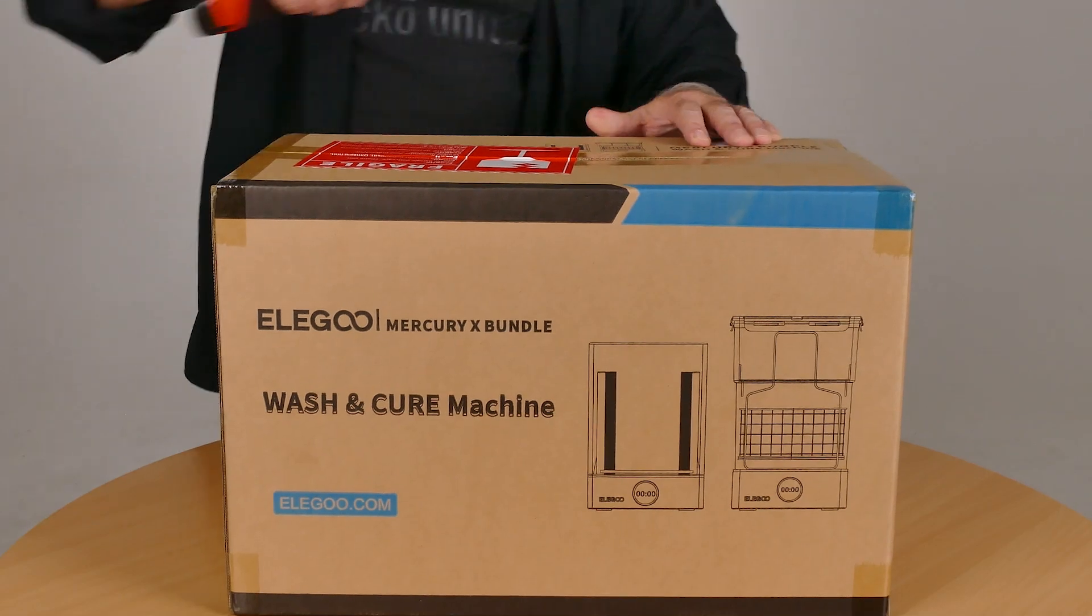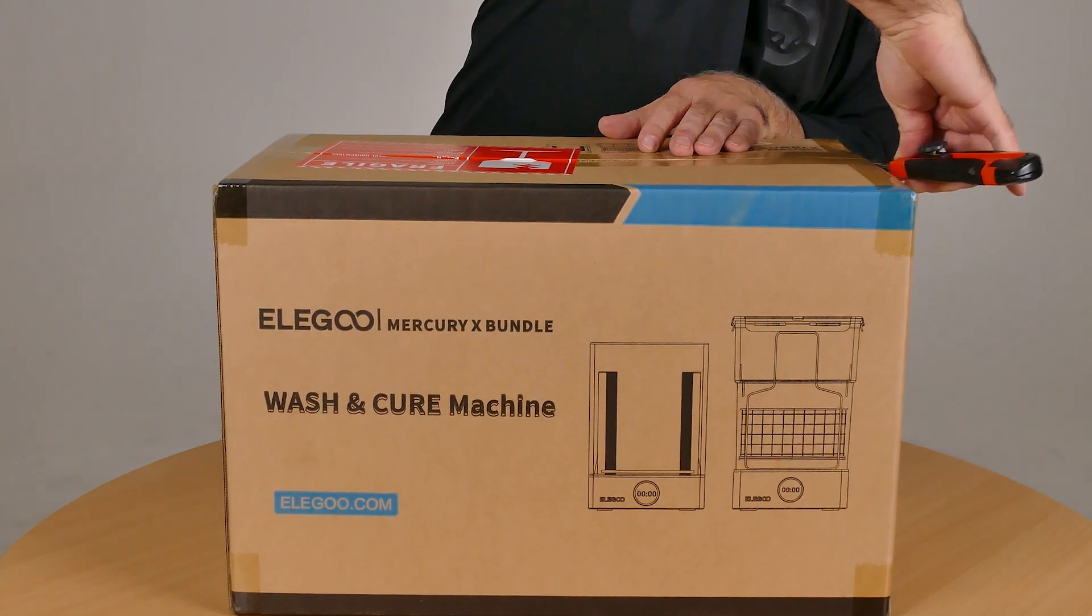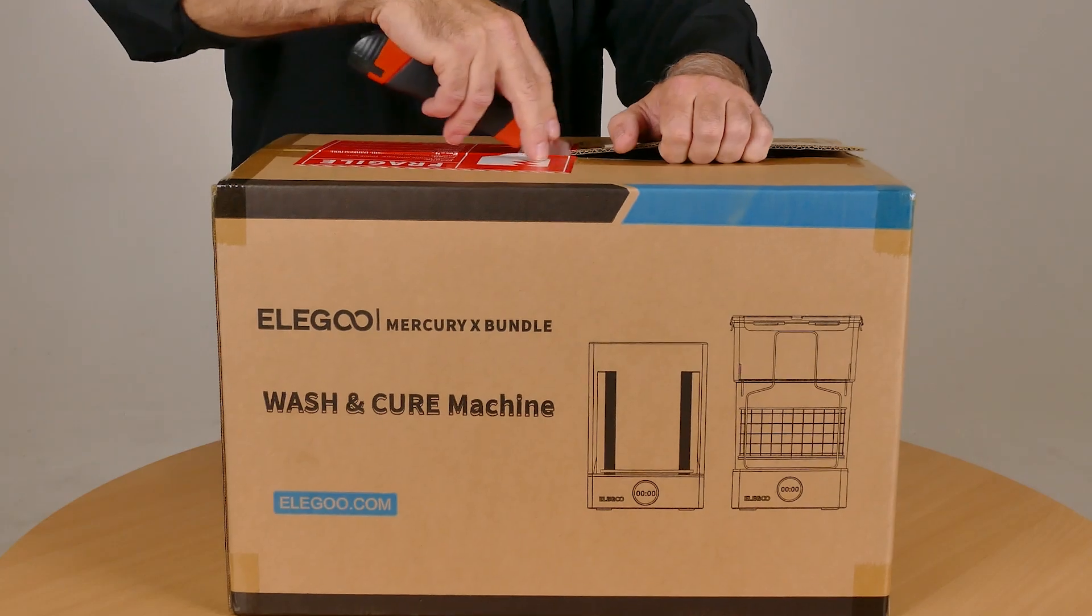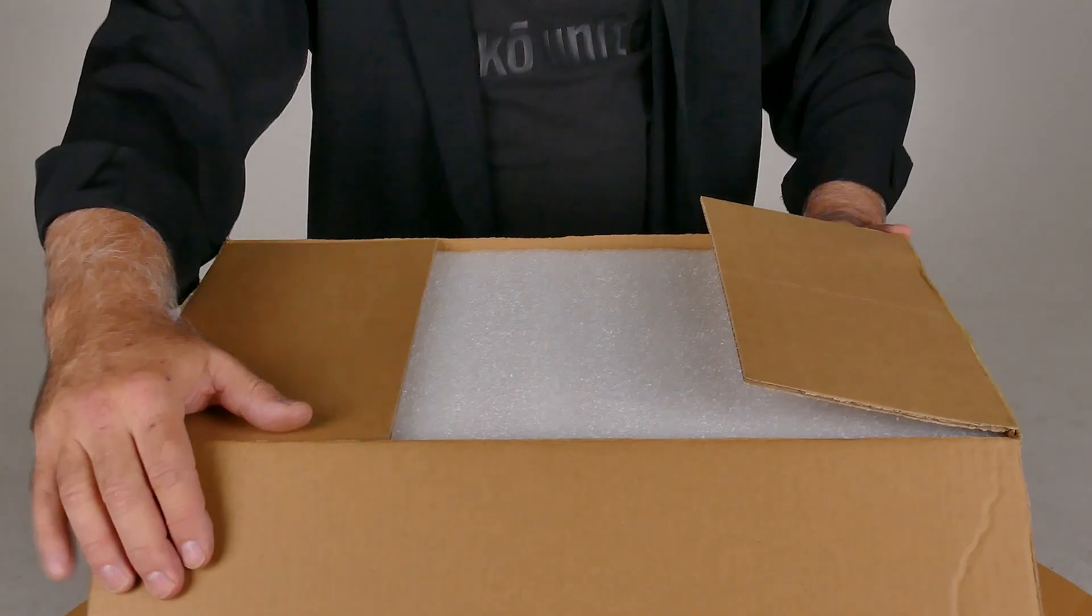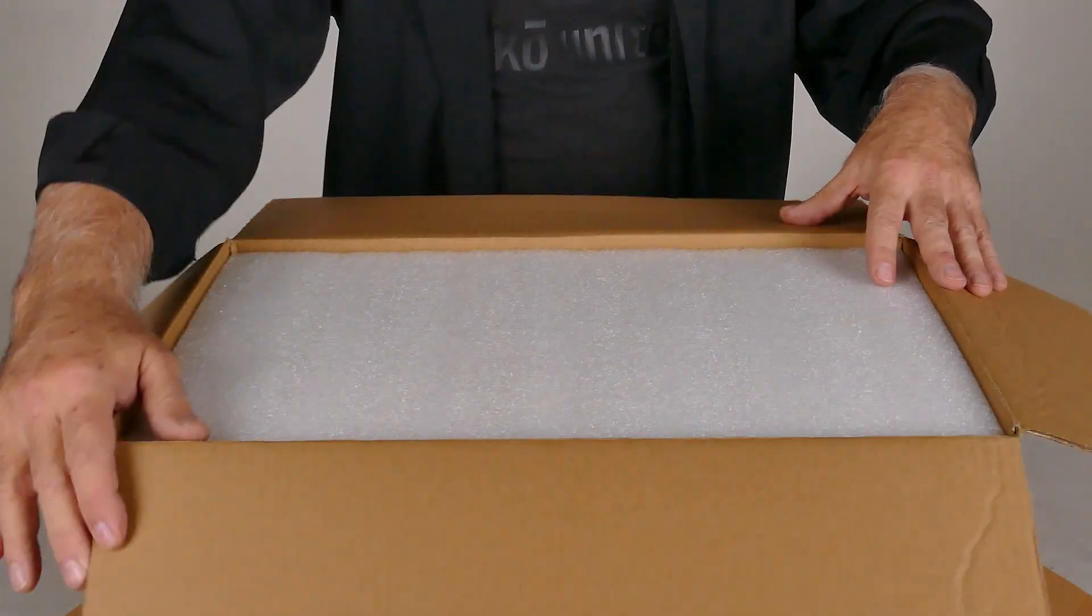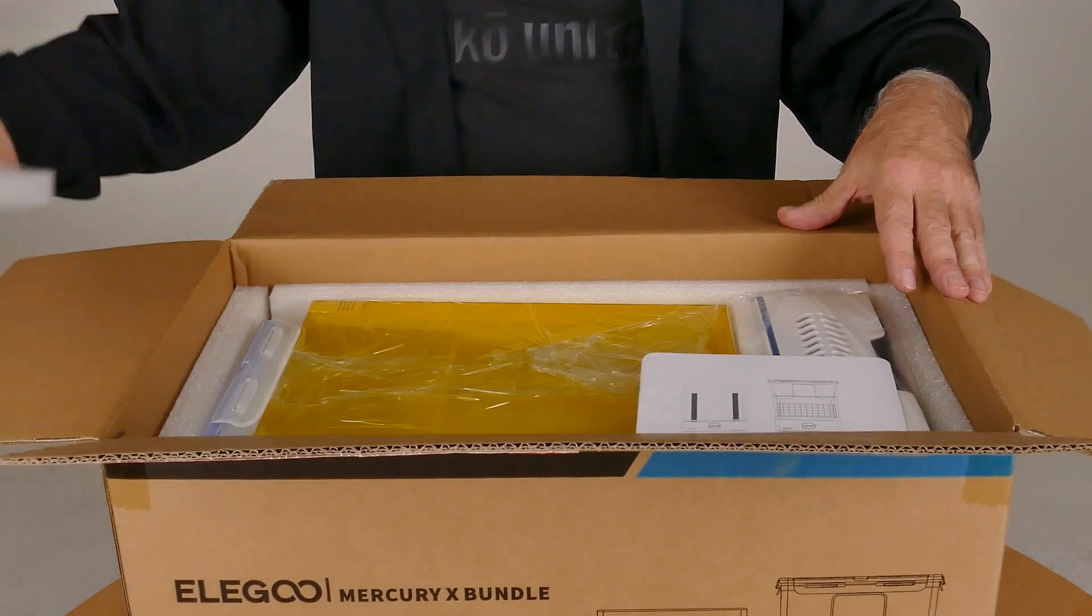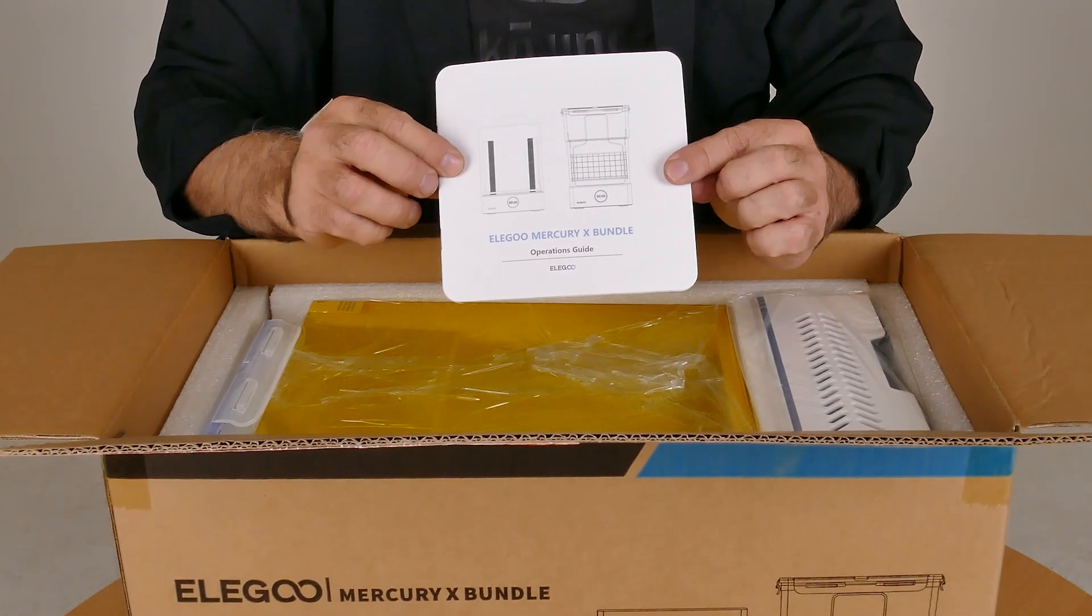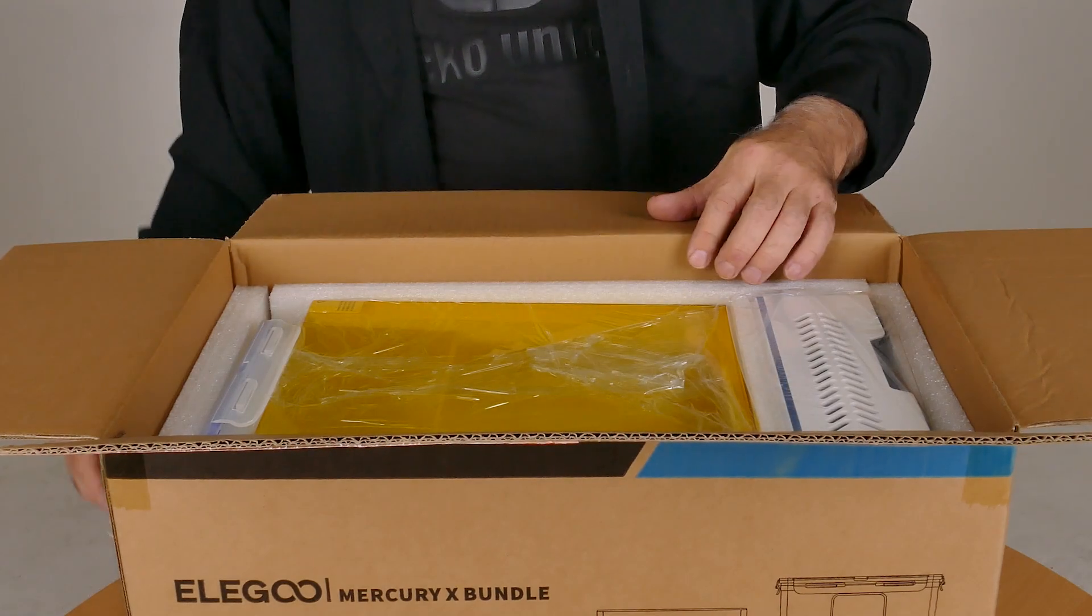With the printer all done, let's move on to the wash and cure machine. It's interesting they actually call it a machine when there's actually two machines in the box. Again, very well packed, lots of foam to keep everything into place. On top is the operational manual.